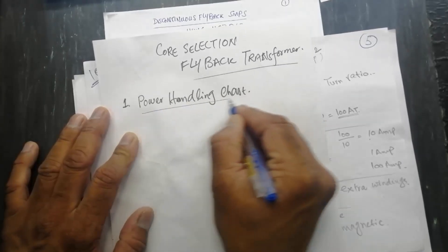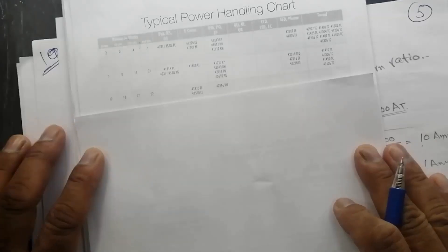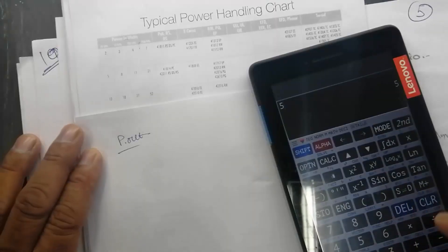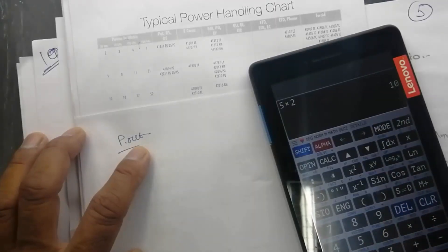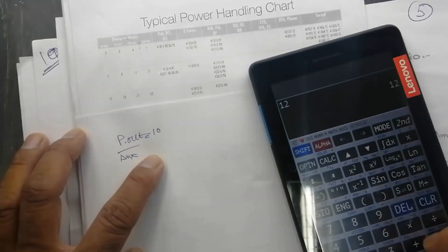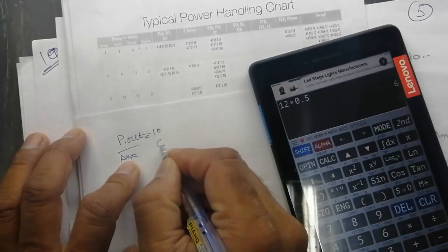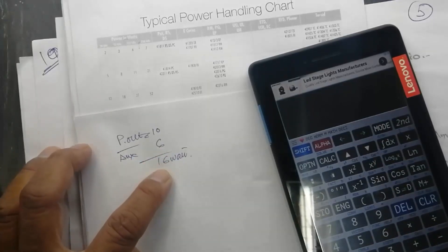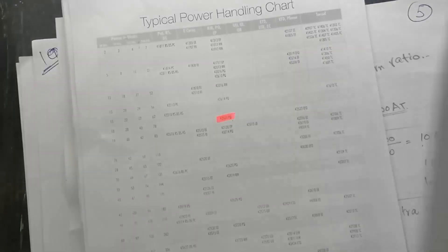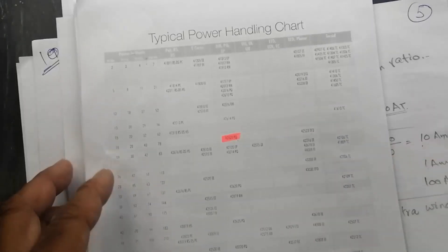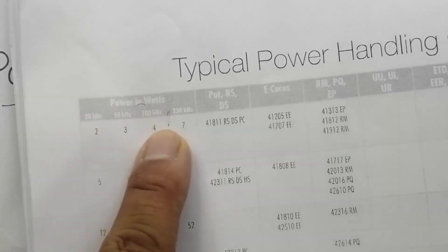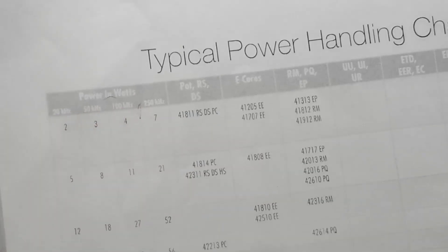For a flyback transformer, we have different ways to select a core. The first and easiest method is the power handling chart. To use this chart, we need P-out. P-out is 5V at 2A, which is 10 watts, and auxiliary winding is 12V at 0.5A, which is 6 watts — a total of 16 watts. So we are going to select a transformer for 16 watts.